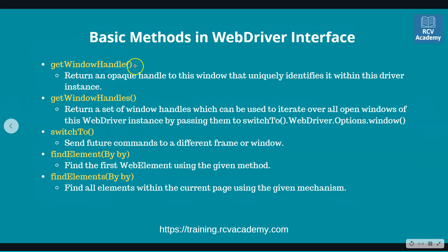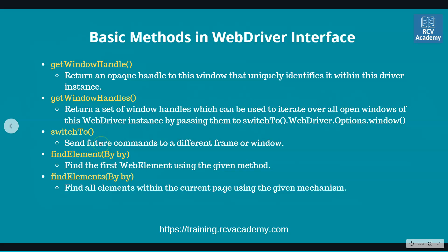The next methods are getWindowHandle and getWindowHandles. getWindowHandle is required to handle the browser window. When your browser window opens, it gives you a handle for that window so you can perform different actions related to windows — for example, switching windows, switching frames, and switching between tabs. You'll need getWindowHandle and getWindowHandles to do that.